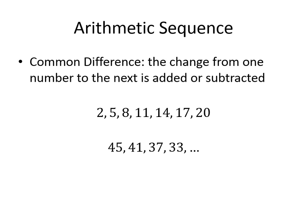An arithmetic sequence is a sequence with a common difference. So you're adding the same thing or subtracting the same thing over and over to continue the sequence. You're going to be adding or subtracting the same number. So if you look at the first one, we've got 2, 5, 8, 11, 14, 17, 20.